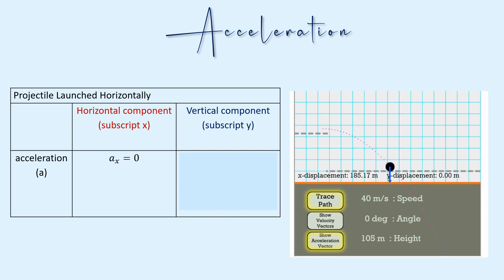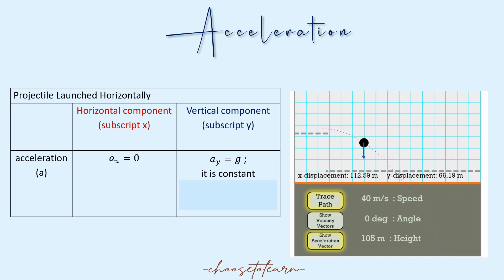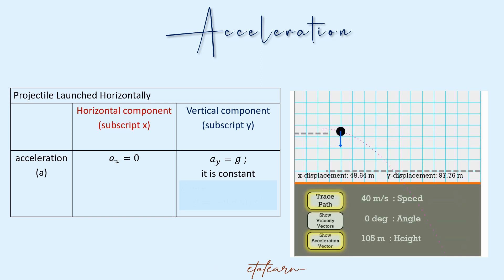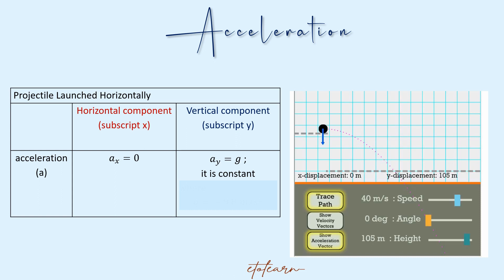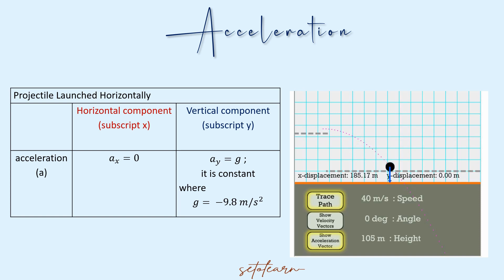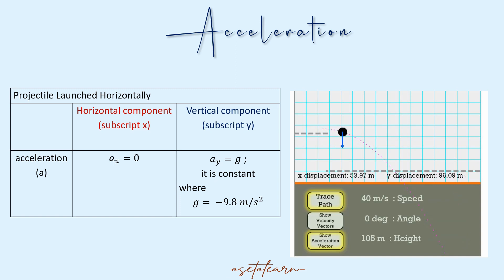For the vertical component — subscript Y — the acceleration is constant. The vertical component of acceleration equals the acceleration due to gravity, which is negative 9.8 meters per second squared.